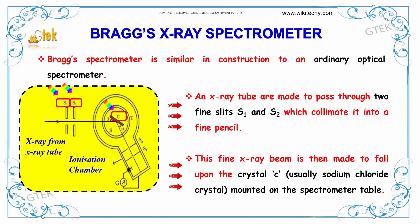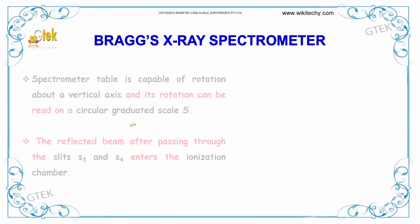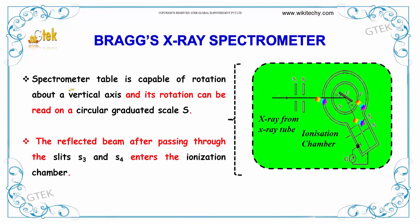This fine X-ray beam is then made to fall upon the crystal C — usually a sodium chloride crystal — mounted on a spectrometer table. The spectrometer table is capable of rotation about a vertical axis, and its rotation can be read on a circular graduated scale S.